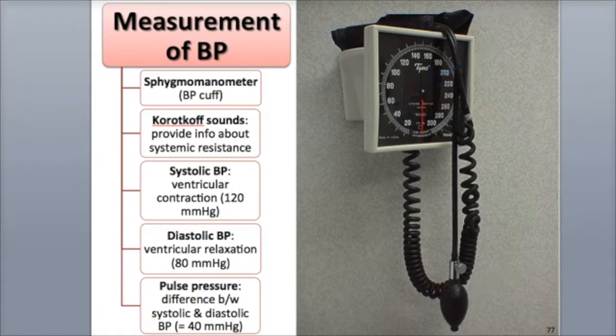The arm where blood pressure is being measured should lay at the same level as the heart. The cuff is then inflated until the brachial artery is compressed and the blood flow stops. A stethoscope is then placed on the brachial artery below the cuff, and then the cuff is slowly deflated.